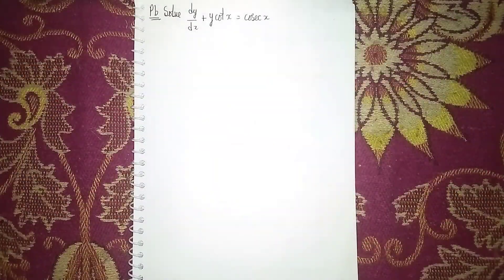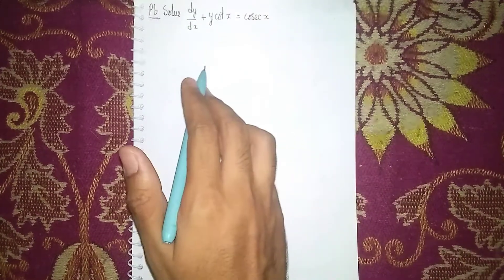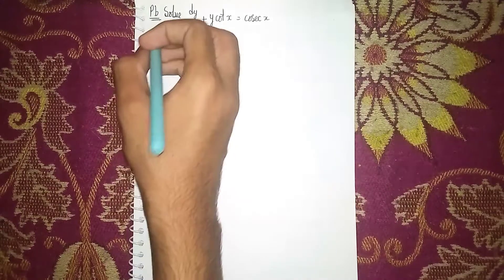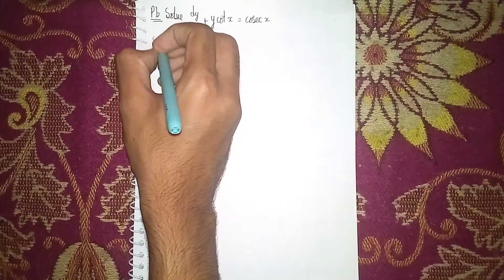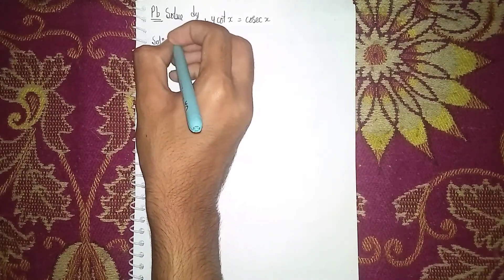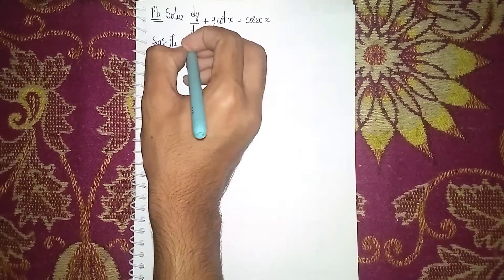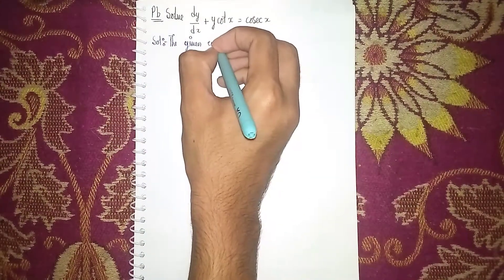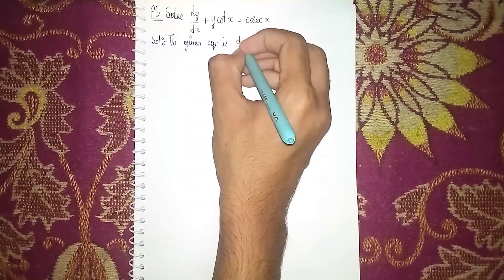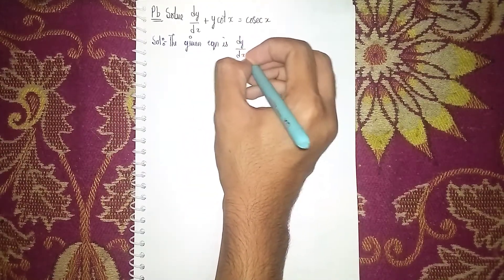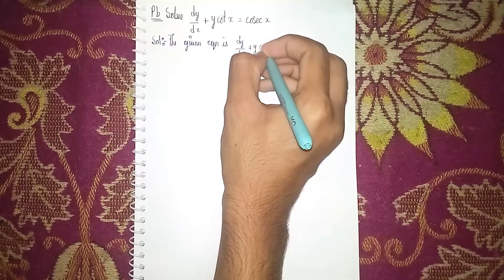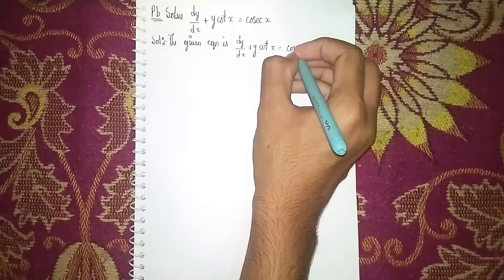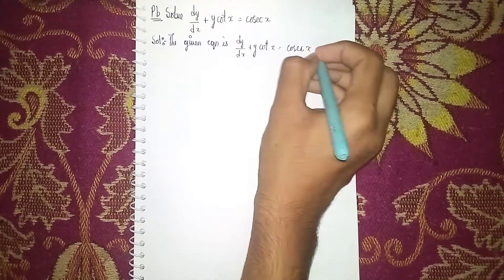Hello everybody, back to my channel. This question is: solve dy/dx plus y·cot(x) equals cosine x. To start solving it, this is a differential equation. The given equation is written as dy/dx plus y·cot(x) equals cosec x.